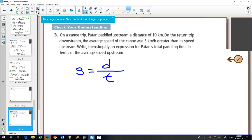You can then take this formula and rearrange it. You could get distance by itself by multiplying both sides of that equation by time. You could get time by itself by dividing both sides by speed. We want to find Patan's total time in terms of the average speed upstream.